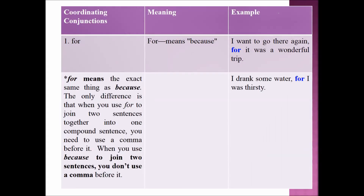In the following table we can see coordinating conjunctions, their meaning, and examples. First, we are going to learn about FOR. FOR means 'because'. Example sentence: 'I want to go there again, for it was a wonderful trip.'